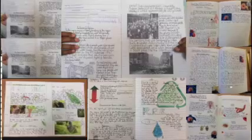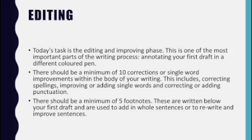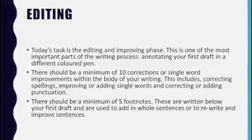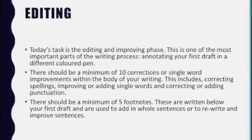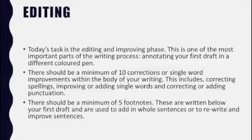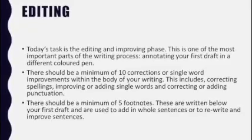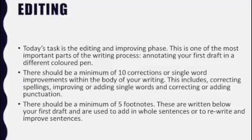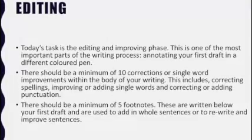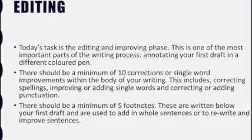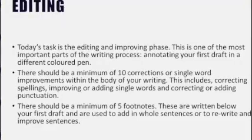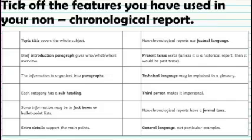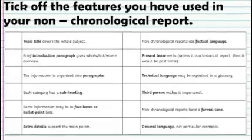Finally, we expect you to do some editing — it's a very important part of your writing process. You can edit in a different color. Think about spellings and how to improve single words or a whole sentence within your writing. Think about adding to it, changing your sentence structure, and including an adverb where necessary. Consider all the different ways you could edit and improve your writing, and then tick off the features you have used in your non-chronological report when you're done.